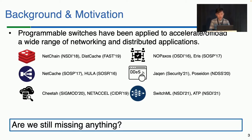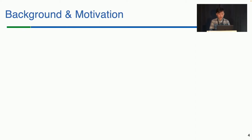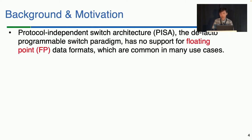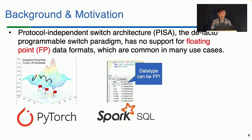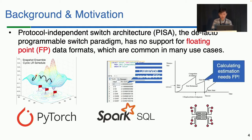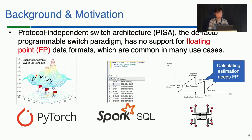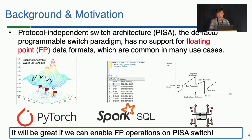Having said that, are we still missing anything in the programmable switch? In this work, we find that the floating-point data format is not well supported by protocol-independent switch architecture, or PISA, the most popular programmable switch paradigm. Floating-point is everywhere. For example, in distributed machine learning training, workers need to exchange gradient data for model update. In database queries, the targeted data column can be in floating-point format. In some network congestion control algorithms, floating-point operations are needed for bandwidth estimation. Hence, floating-point operations are really desirable in PISA switches for future application exploration.